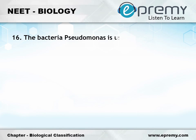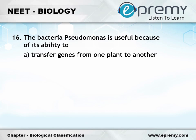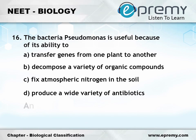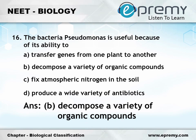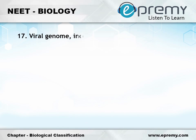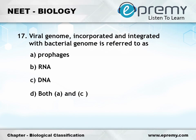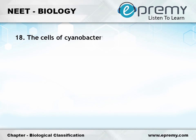Question number 16: The bacterium Pseudomonas is useful because of its ability to — Option A: transfer genes from one plant to another; Option B: decompose a variety of organic compounds; Option C: fix atmospheric nitrogen in the soil; Option D: produce a wide variety of antibiotics. The answer is Option B, decompose a variety of organic compounds. Question number 17: Viral genome incorporated and integrated with the bacterial genome is referred to as — Option A: prophages; Option B: RNA; Option C: DNA; Option D: both A and C. The answer is Option A, prophages.